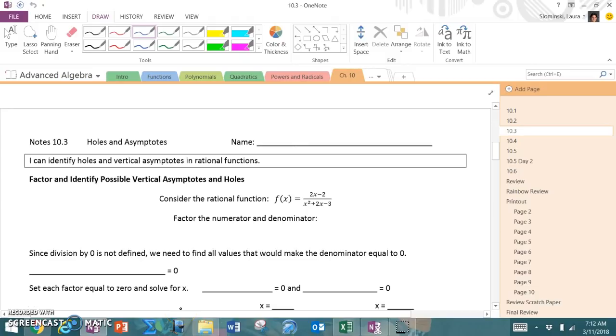Hi, this is Laura Sliminski at Edina High School, and today we are going to be doing the notes for section 10.3 called Holes and Asymptotes. The objective is I can identify holes and vertical asymptotes in rational functions.